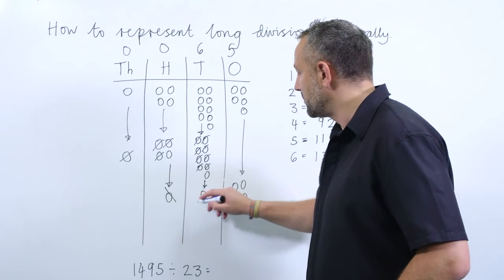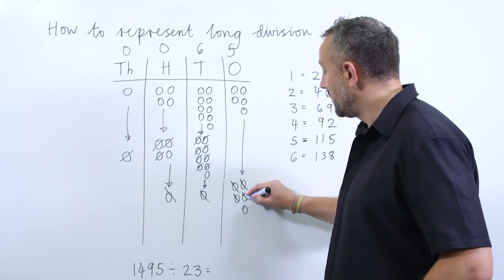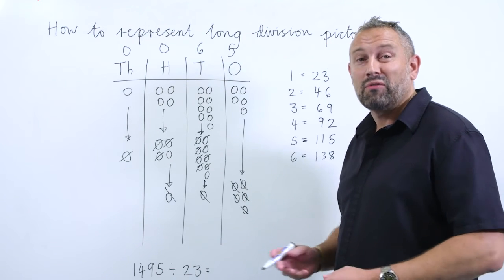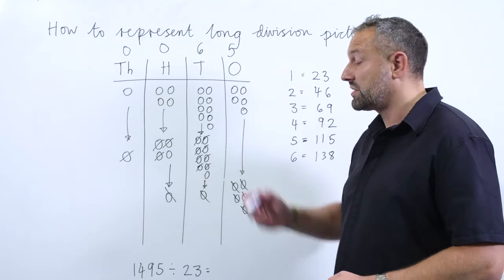Five. And let's subtract these. Now there is nothing left to subtract, therefore we have no remainders. So our answer is 65.